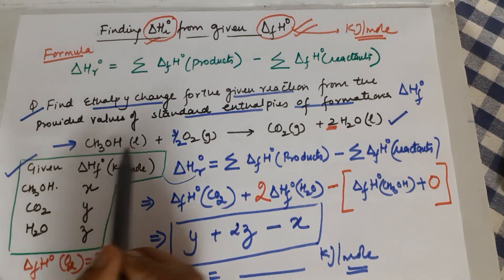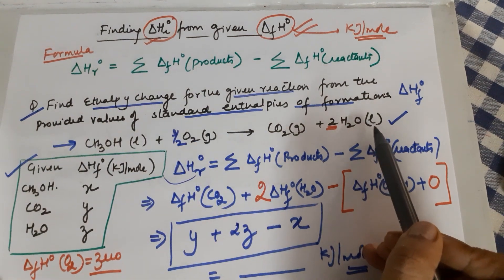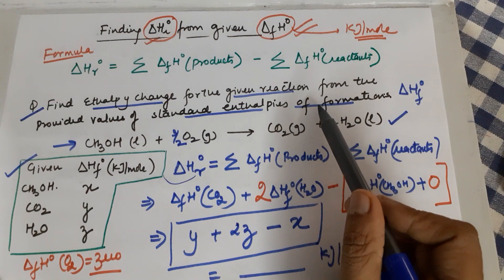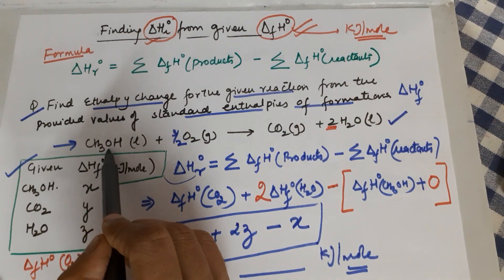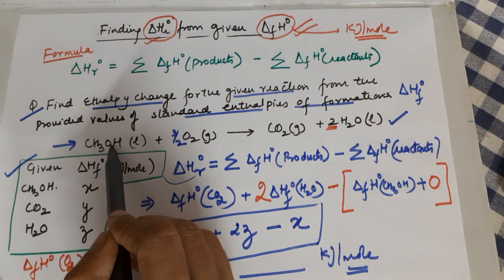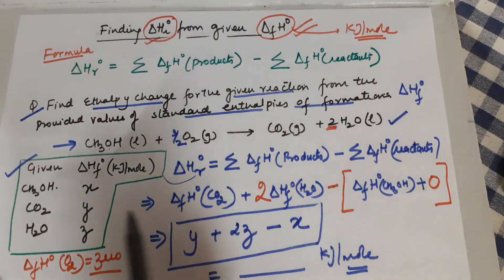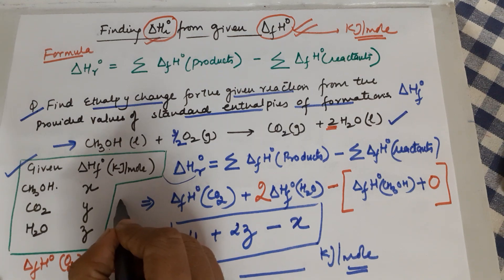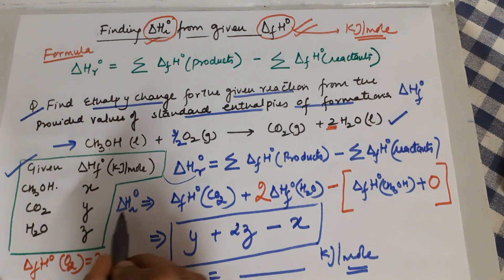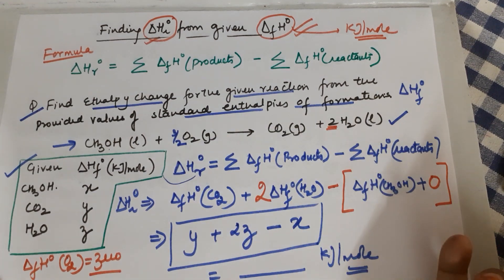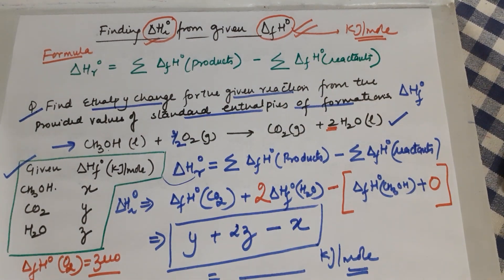This question can also be reversed: they might give you the reaction enthalpy along with values for water and CO₂, and ask for the enthalpy of formation of methanol. In that case, ΔH°rxn is known and one of the ΔHf° values is unknown, so you solve for it using the same formula.